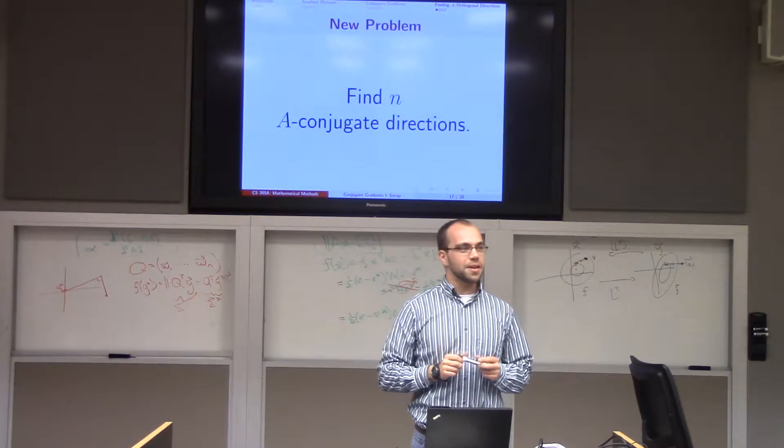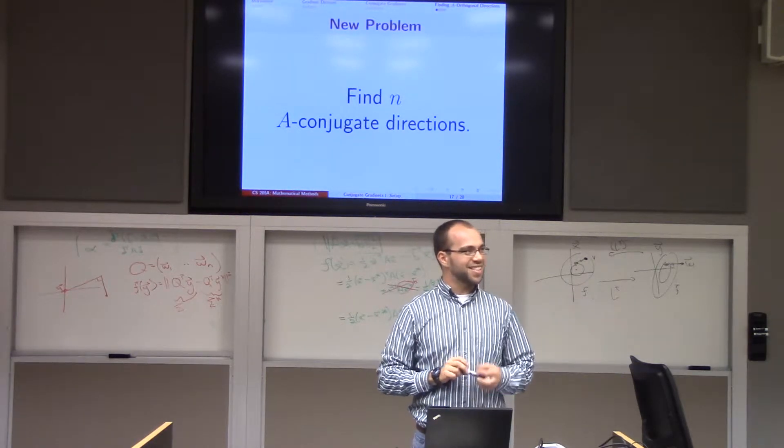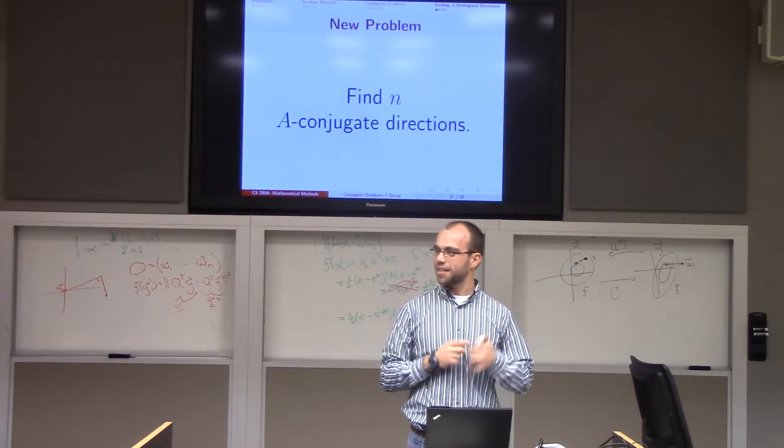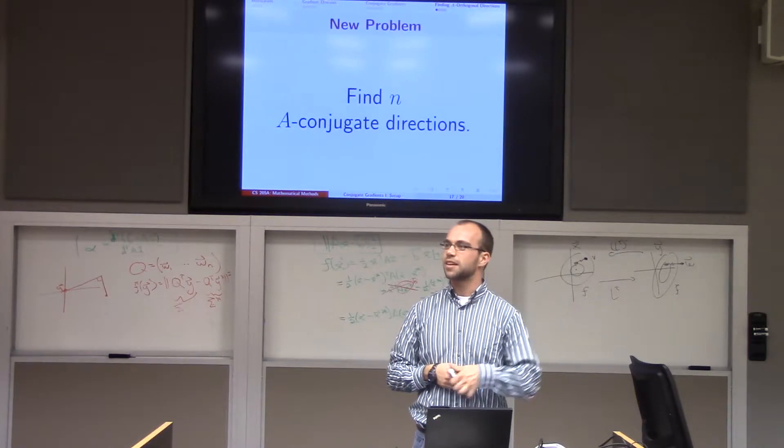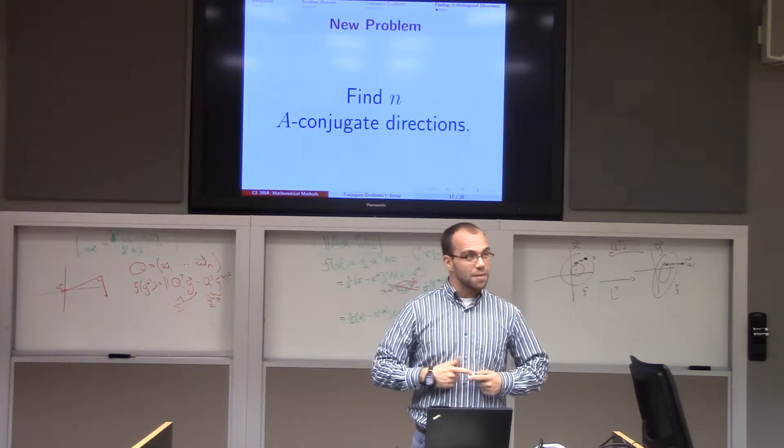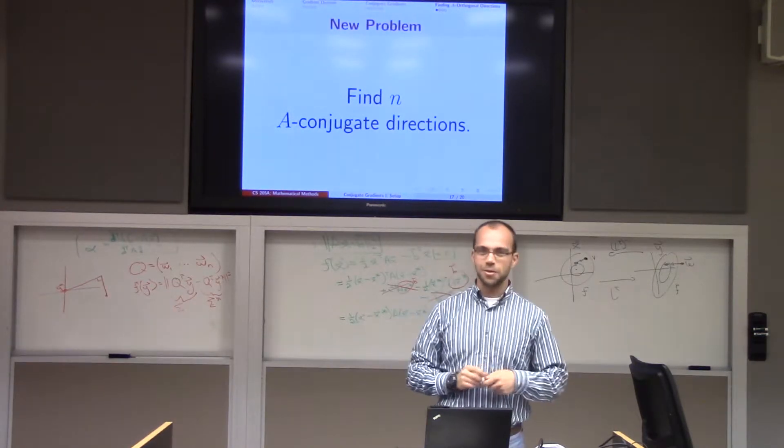So hopefully you guys agree with me now that if I can identify n directions that are all A-conjugate, then solving A x equals b is easy. I just line search along each of these directions, and then I've proven that this will give me exactly the solution to my linear system. In fact, this is nice. It shows that methods based on conjugate vectors don't run forever. They actually terminate. These are polynomial time algorithms.